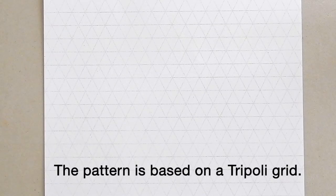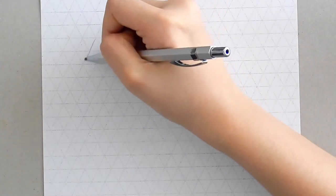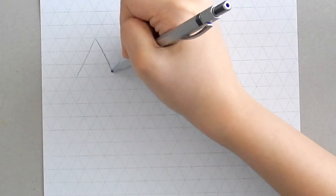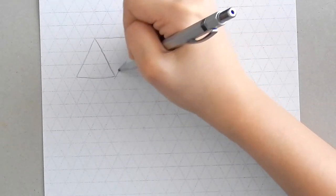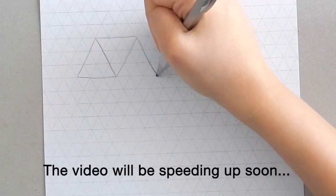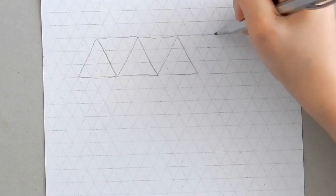Daisy chain is a pattern that is based on a tripoli grid, and I'm actually going to be drawing it in pencil on a grid paper, but you don't have to draw the grid, especially after you've gotten the hang of the pattern. However, drawing the grid will definitely make your pattern look much neater.